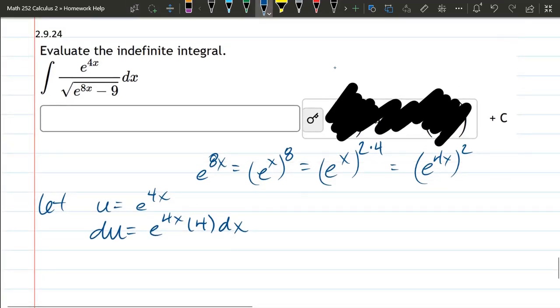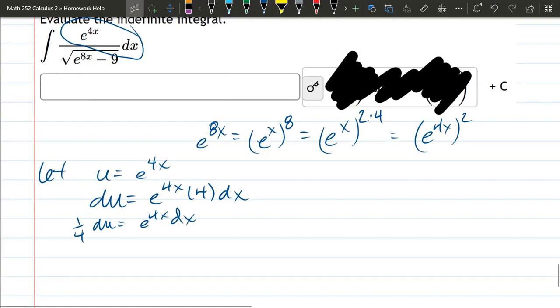The only thing we don't have, we have e to the 4x dx, we just don't have the extra 4. So, we'll move the 1/4 to the other side. There we go. We're ready for our u sub.